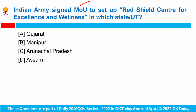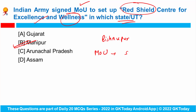The Indian Army signed a Memorandum of Understanding to set up the Red Shield Centre for Excellence and Wellness in Bishnupur District in the state of Manipur. The Red Shield Division under Spear Corps signed the MOU with Corporate Partner State Bank of India Foundation and Training Partner National Integrity and Educational Development Organization. This centre will coach underprivileged students of Manipur to make them eligible for admission to the best colleges and universities in India.